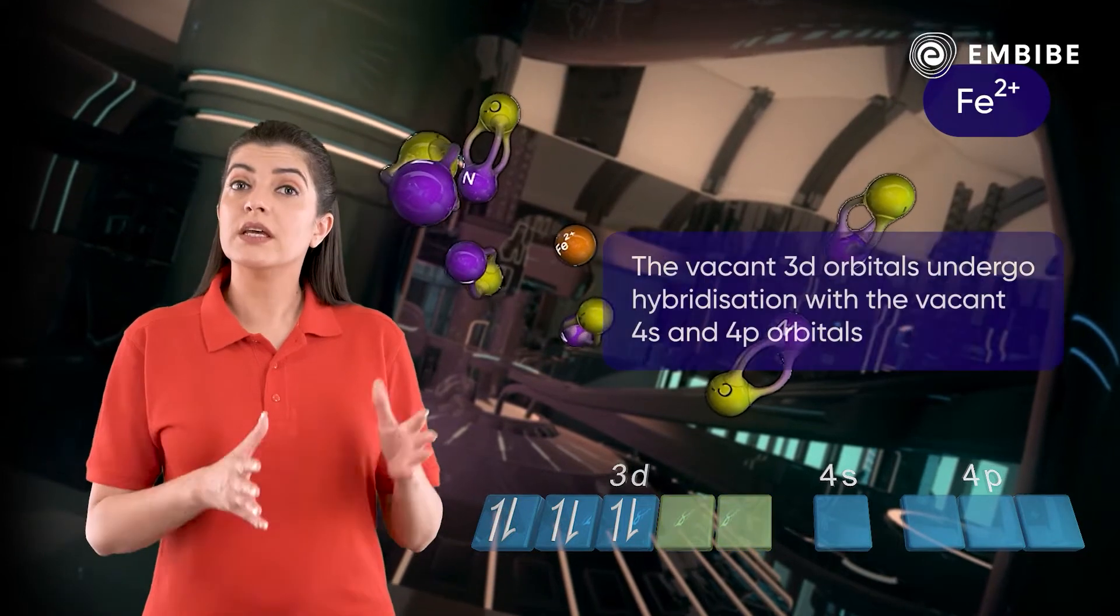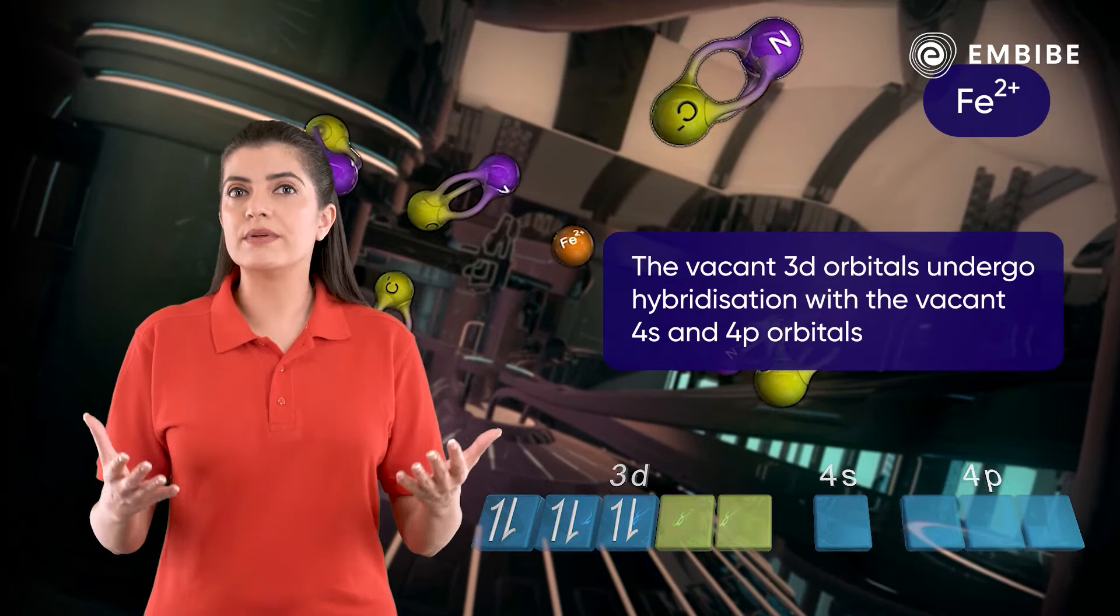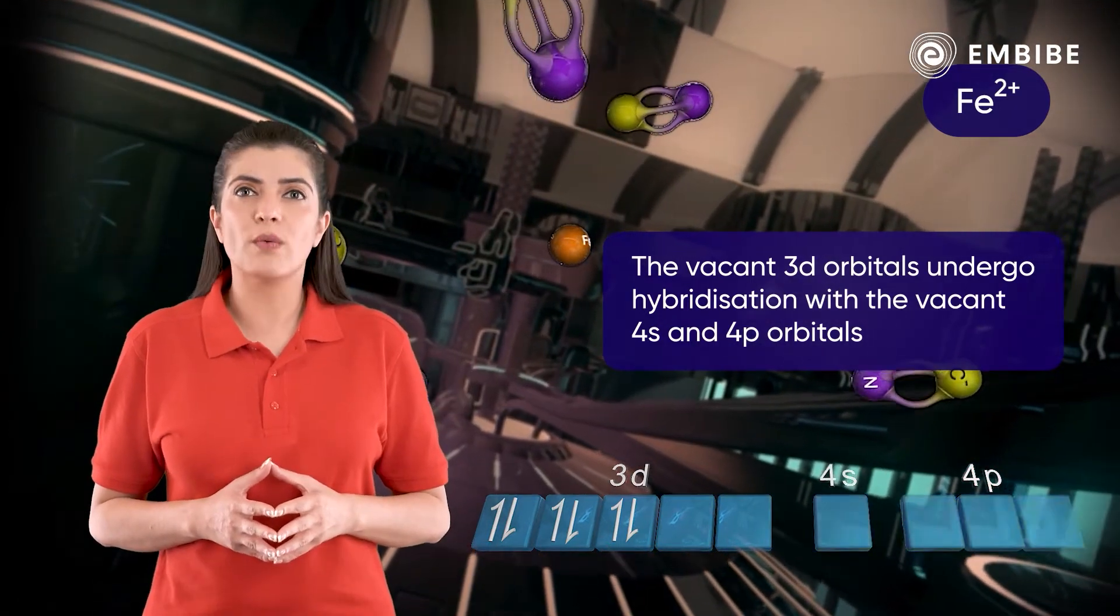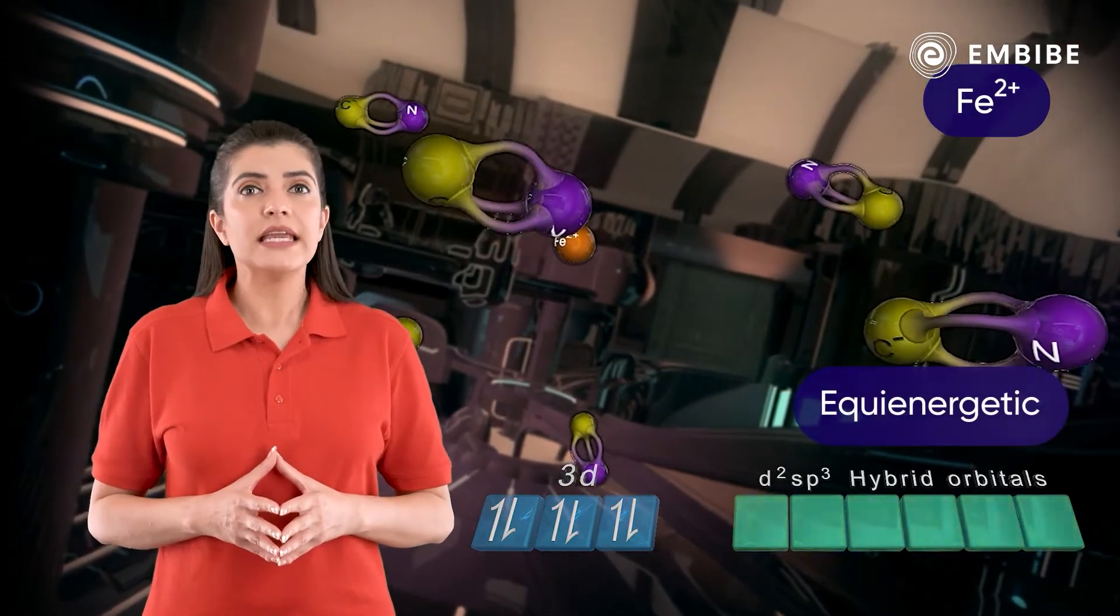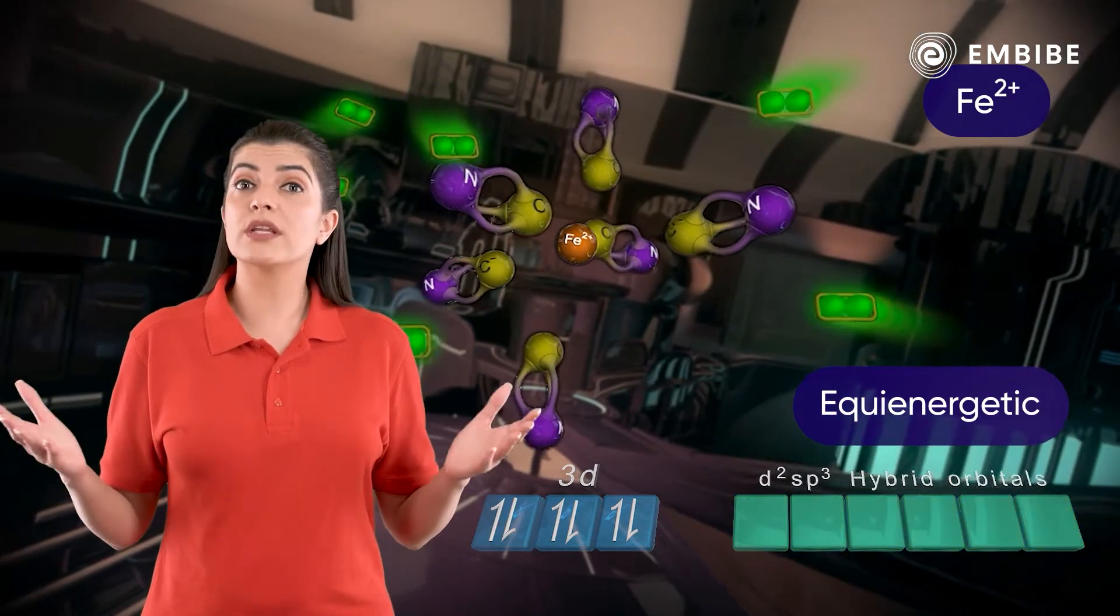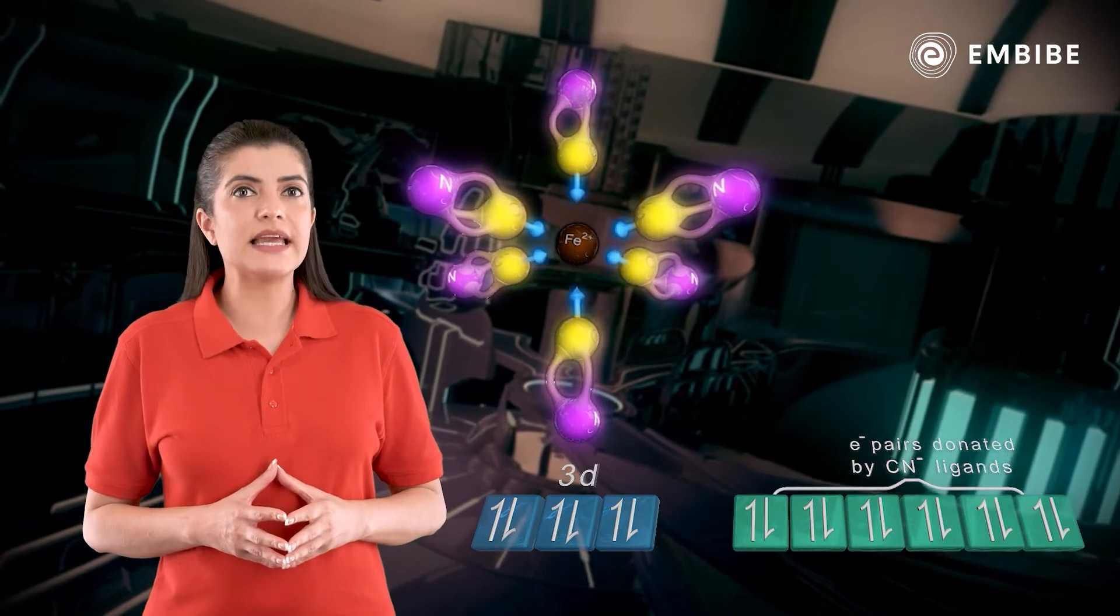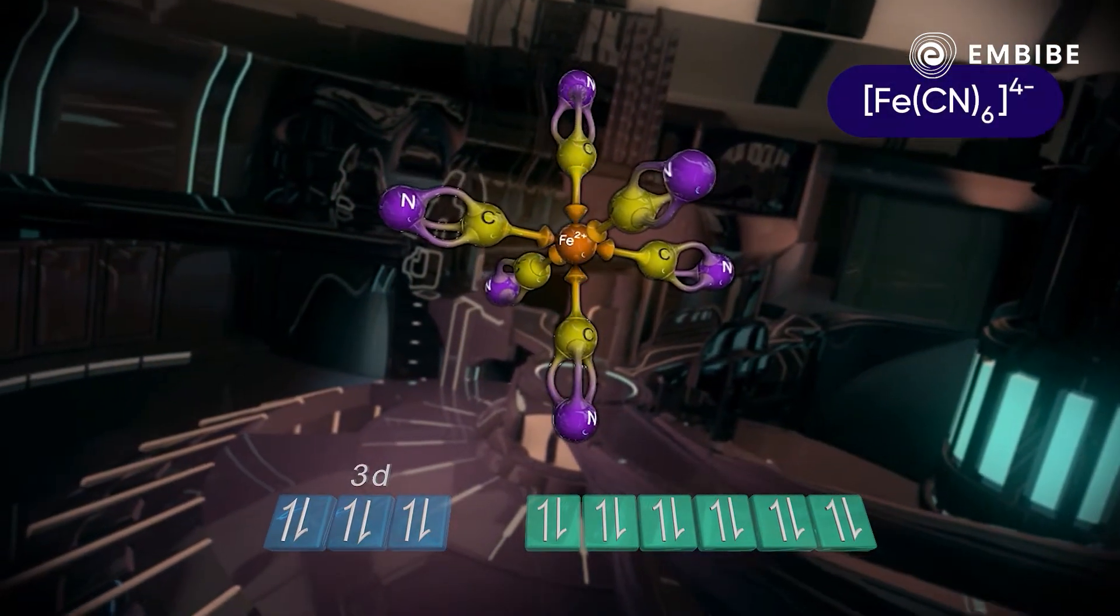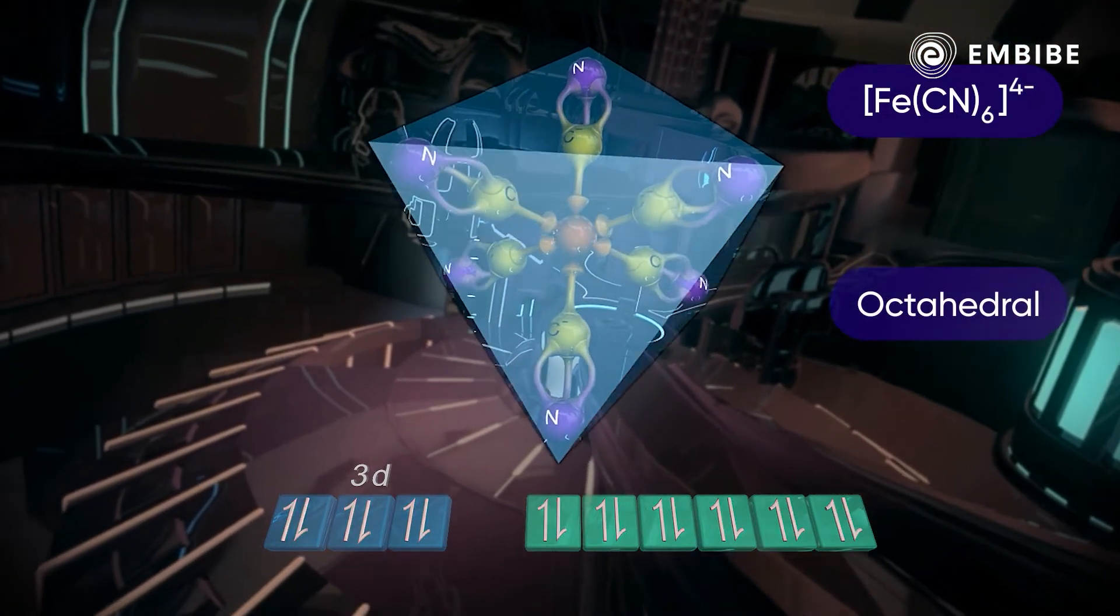The two vacant 3d orbitals thus formed undergo hybridization with the vacant 4s and three 4p orbitals. This results in the formation of six equi-energetic d2sp3 hybrid orbitals which can accommodate the six electron pairs donated by the CN- ligands. The [Fe(CN)6]4- ion thus formed is octahedral. Since all the electrons in the complex are paired, it is diamagnetic.